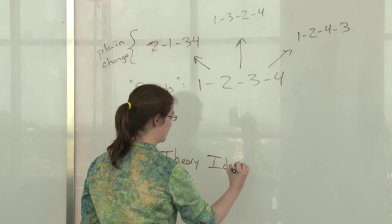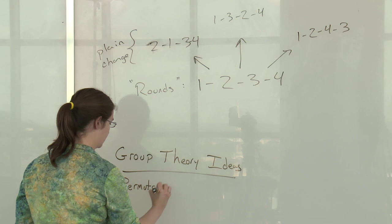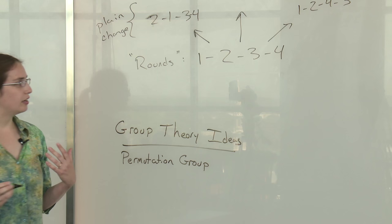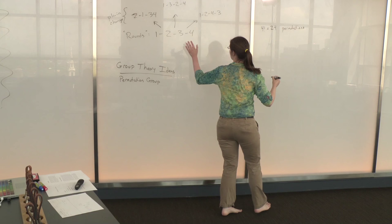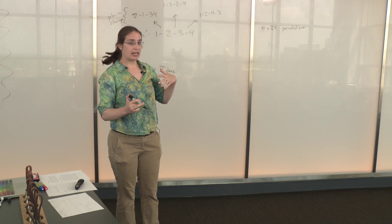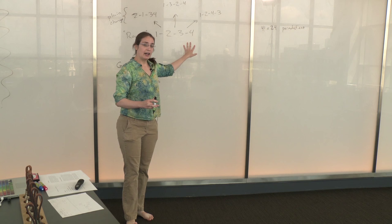The first of those is this idea of a permutation group. Now there are actually four factorial or about 20, or exactly 24, different permutations on four bells. I've only shown you four of them so far: this rounds that we started from and these three that we can get to by using plain changes. Can we use plain changes to get to all the other permutations? Can we get all 24 permutations using these plain changes? The answer turns out to be yes we can.